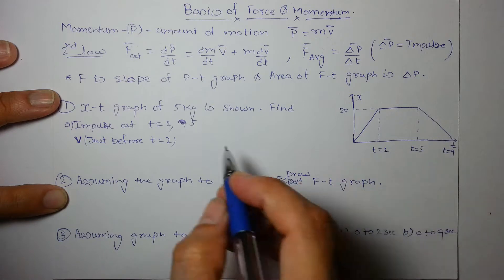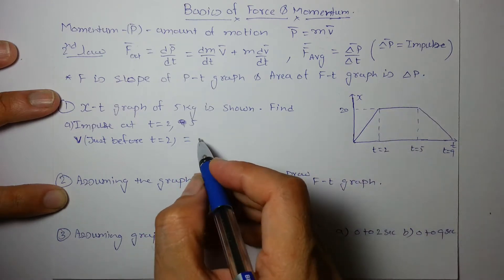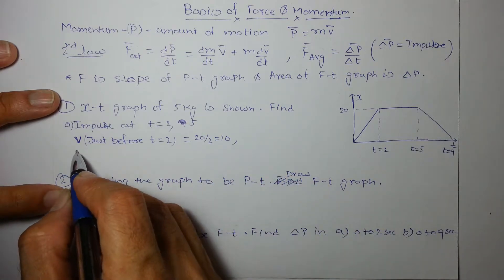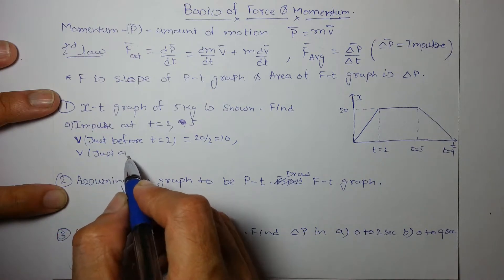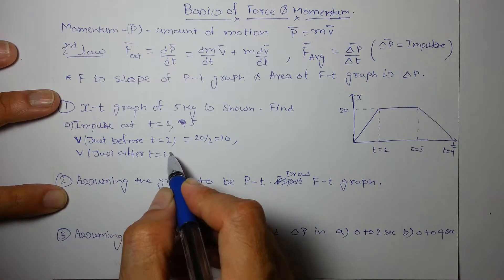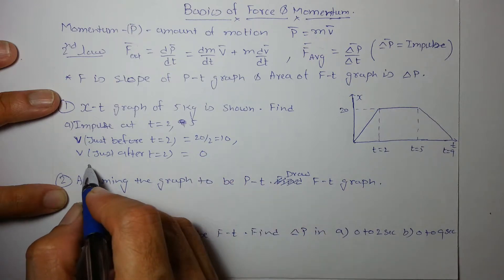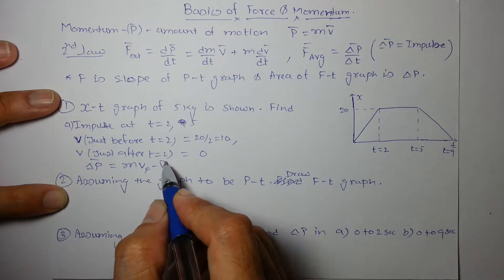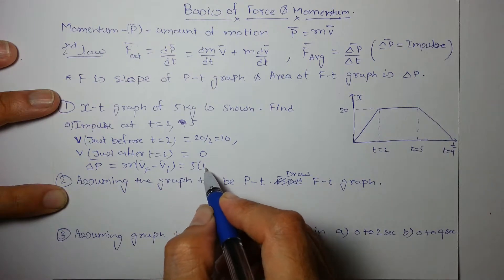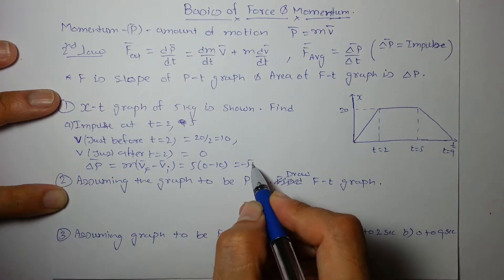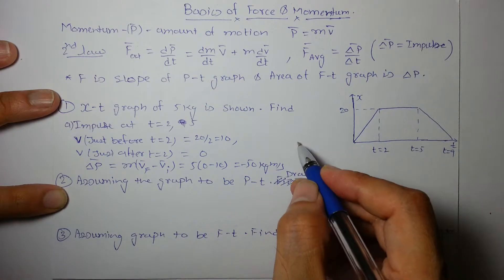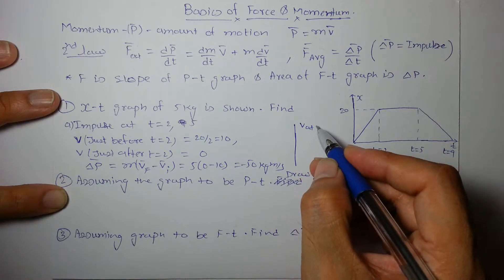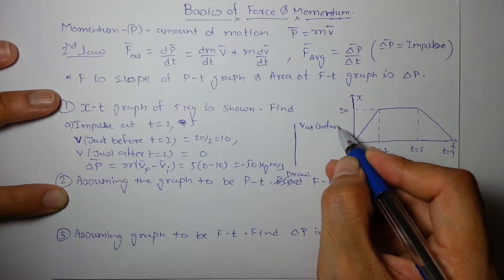Velocity just before t = 2 is the slope of the x-t graph: 20 divided by 2, which is 10. Velocity just after t = 2 is 0. So change in momentum is m(v_final − v_initial) = 5 × (0 − 10) = −50 kg·m/s.